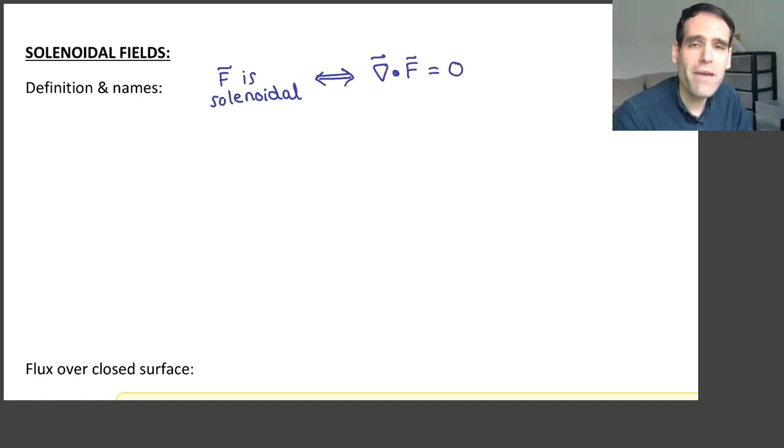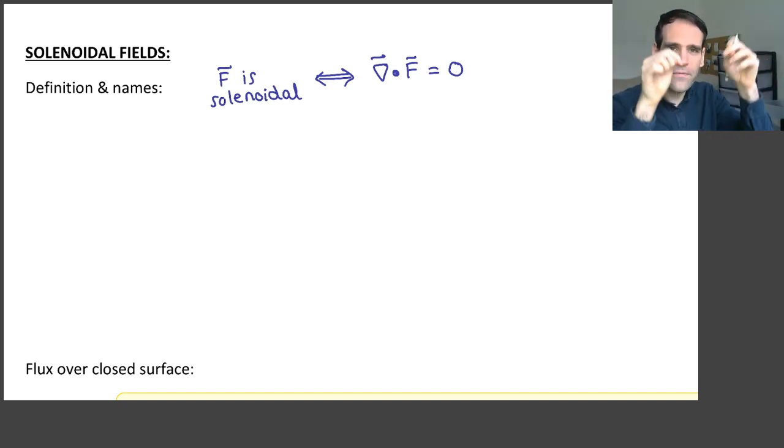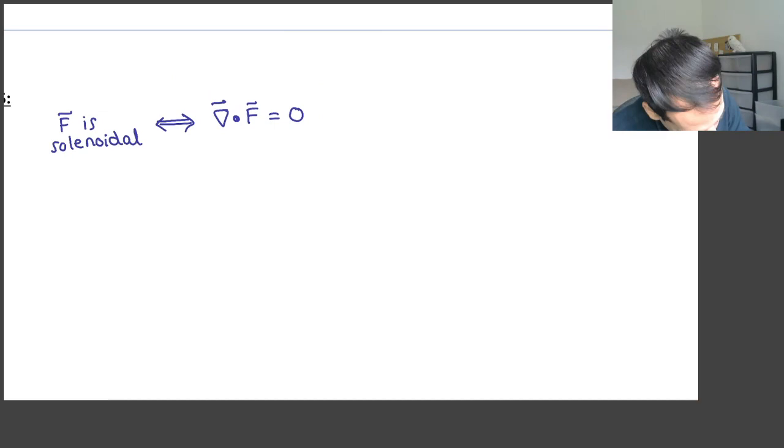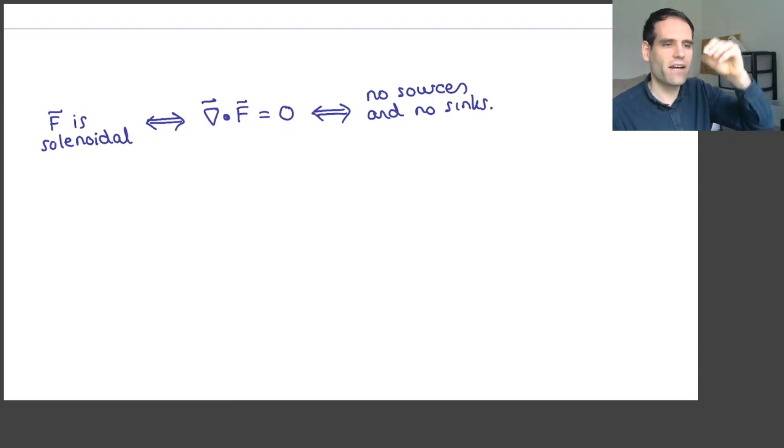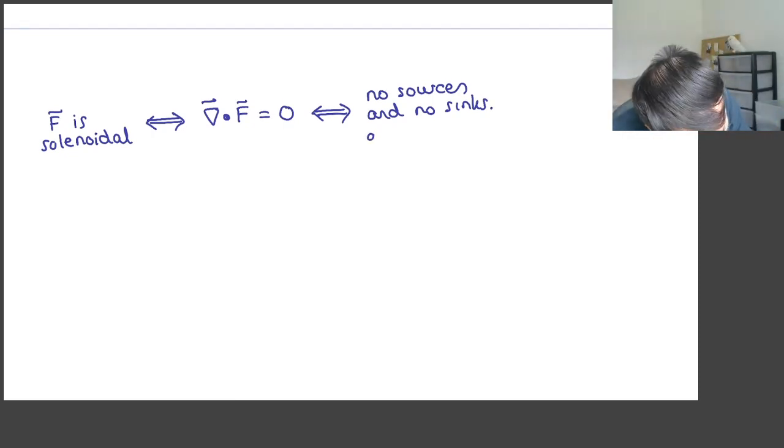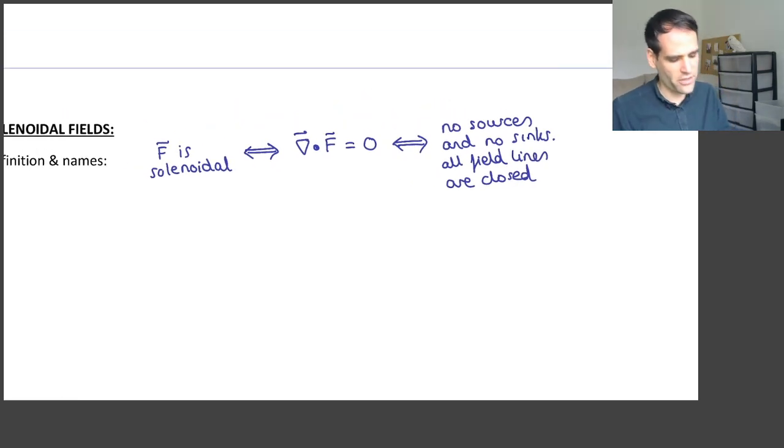If you remember, the divergence tells you about the sources or the sinks of field lines, so this means that there are no sources and no sinks, which also means that all the field lines are closed. They never start and they never end. So this is a solenoidal field.